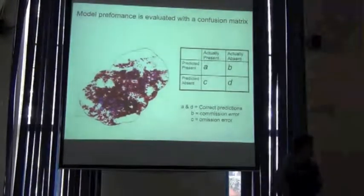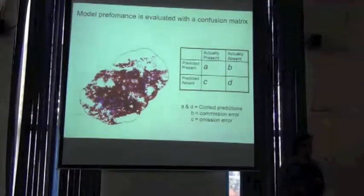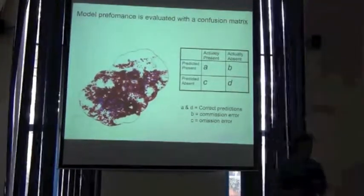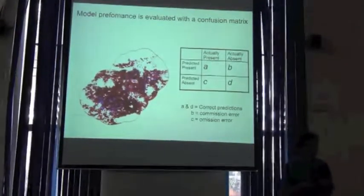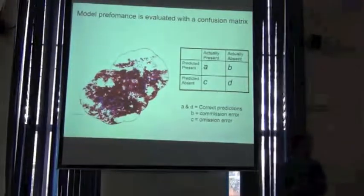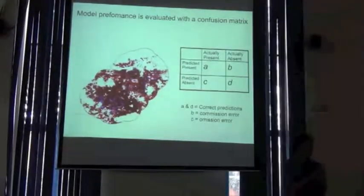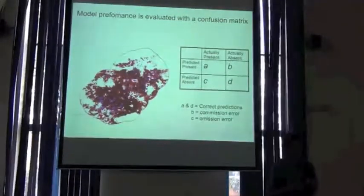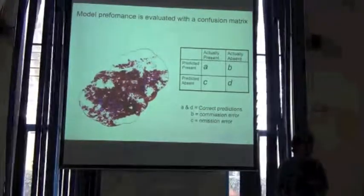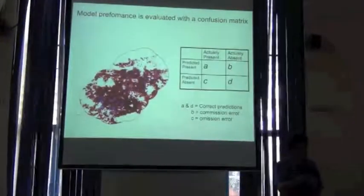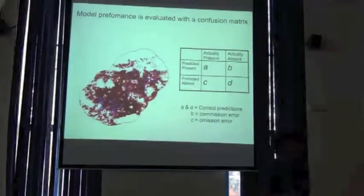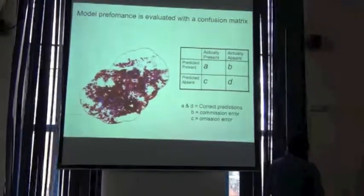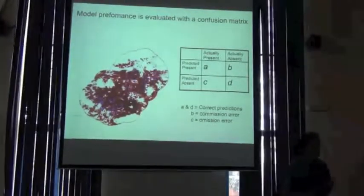This implementation works based on evaluation of the model's errors. When you produce a model, there are two ways it can be wrong. One is when it fails to predict presence — when a point falls outside of the prediction — called an omission error. The other is when the model predicts presence but there is actually an absence, called a commission error. Both are evaluated using the confusion matrix, and this information is used to assess the quality of the models.